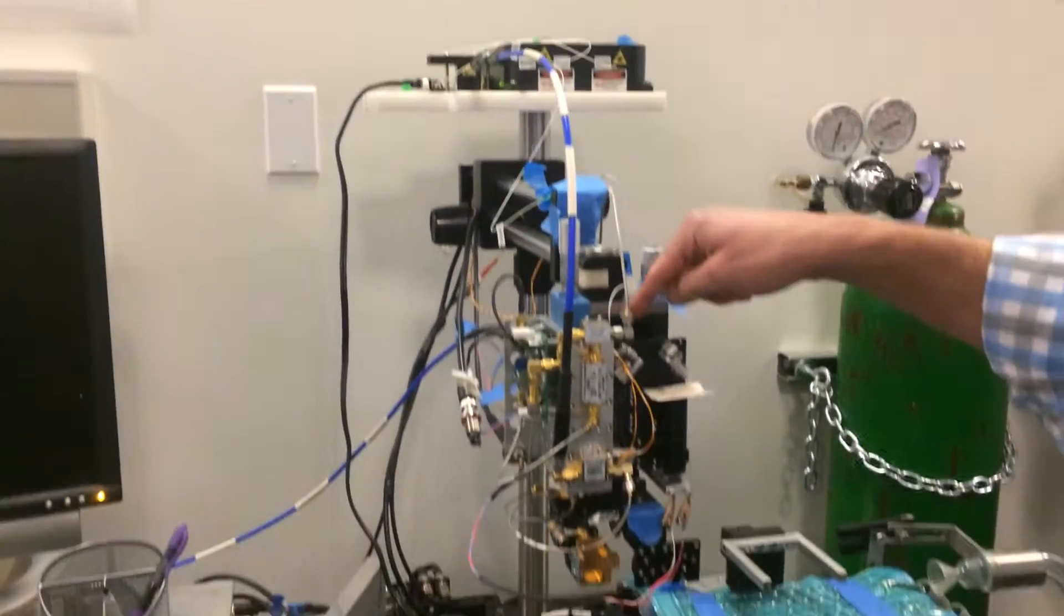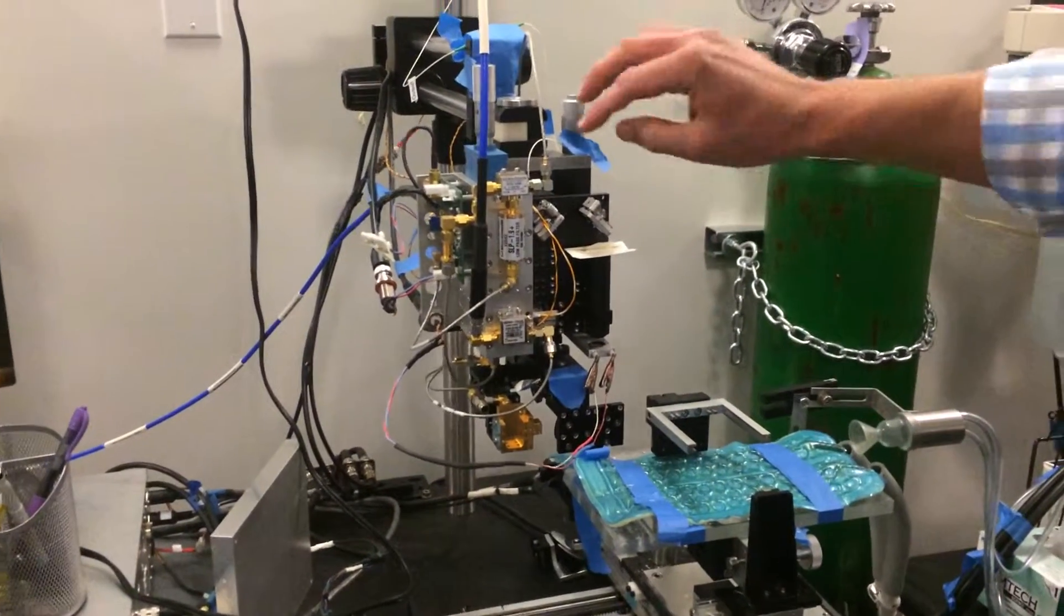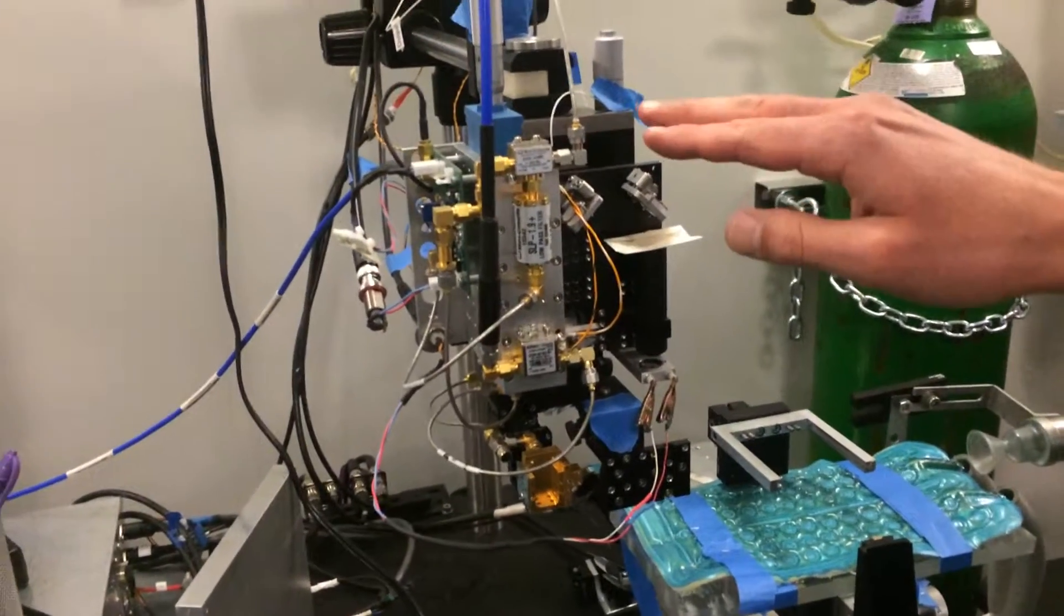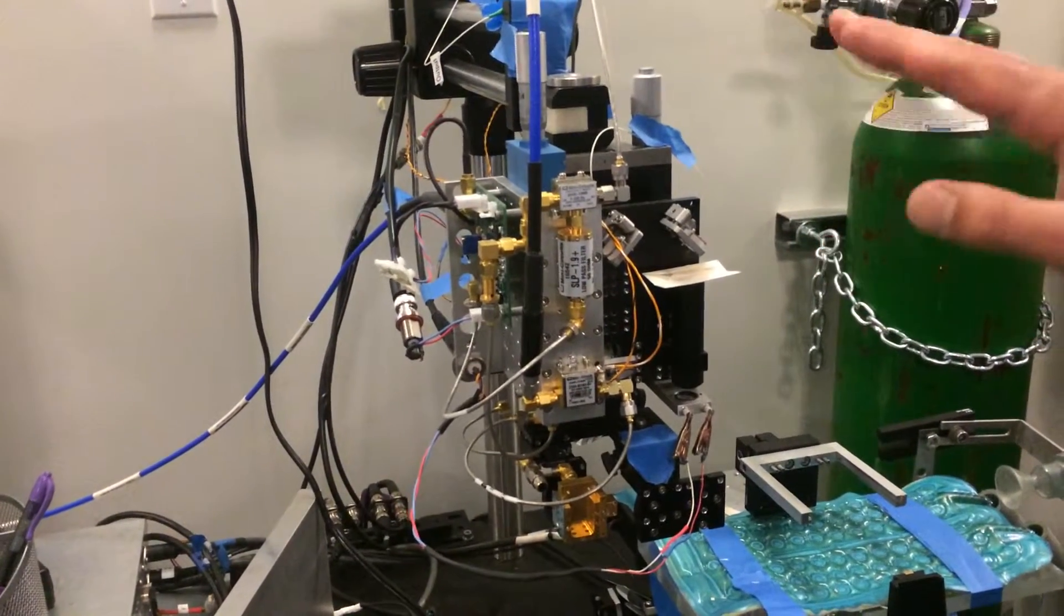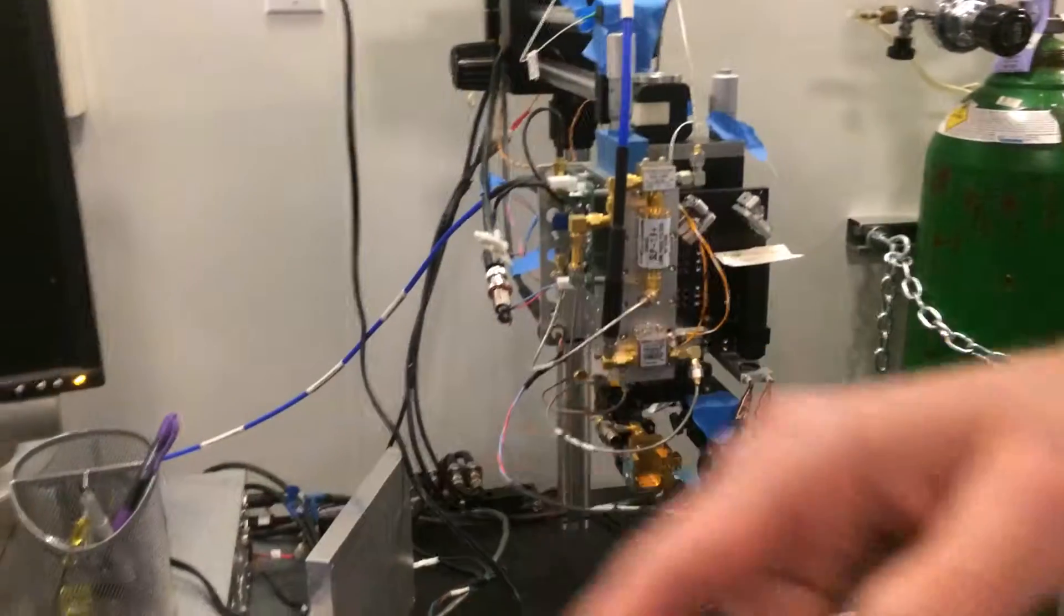1560 EDFA, and then it pumps the PPLN down here. Then we have 780 free space output coming through here. We have this piece here that we've designed with a bunch of free space optics. Part of the reason for the free space optics is to route it down to the lens, nice and collinear with the optical axis.